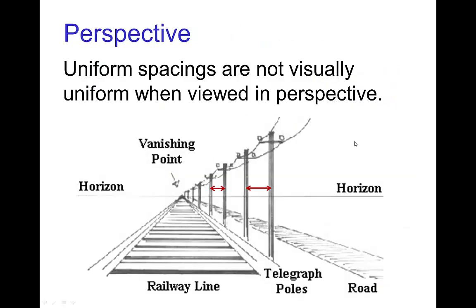One last thing about uniform motion: if we're not viewing the motion in profile — if we're seeing objects moving away from us or towards us — then we have to account for perspective, and uniform spacings are not visually uniform in perspective. Here we see the classic example of a rail line going off into the distance and telegraph poles. Even though we realize the telegraph poles are equally spaced, the visual spacing in our field of view is shorter for poles farther away than for poles closer to us. That's just part of perspective.